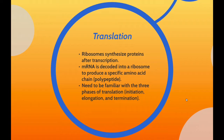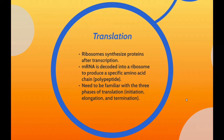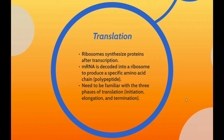The entire process is called gene expression. In translation, messenger RNA is decoded in a ribosome outside the nucleus to produce a specific amino acid chain or polypeptide. The polypeptide later folds into an active protein and performs its functions in the cell. The ribosome facilitates decoding by inducing the binding of complementary transfer RNA anticodon sequences to messenger RNA codons.